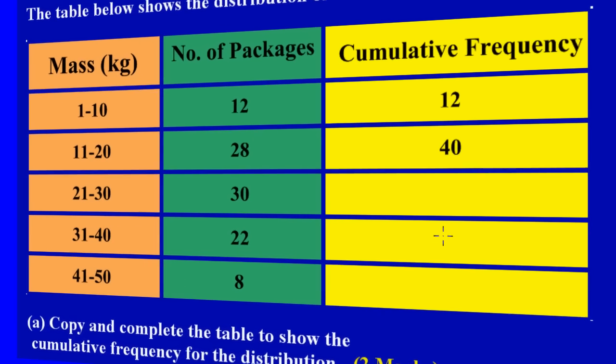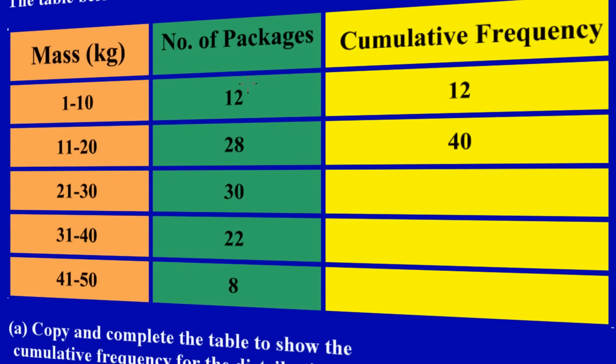If you notice, the first number that is in my second column here, the 12 in the number of packages column, you just take over that number. So the second number in the second column, the number of packages column, you're going to add it to the first up top in the cumulative frequency column. So the 28 you're going to add it to the 12, hence we get our 40.